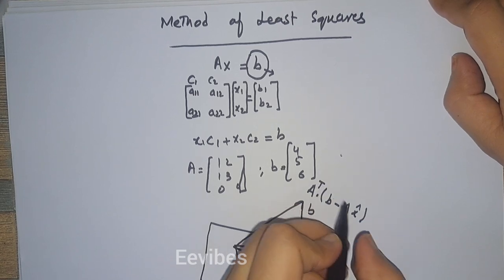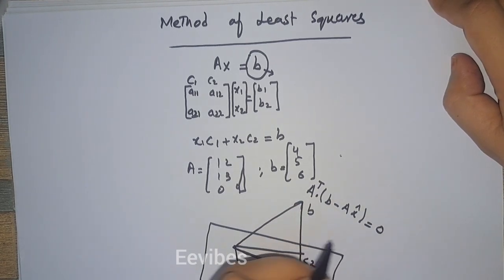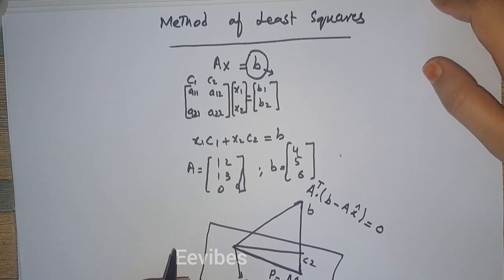So if you take the dot product of it, it will result in 0.